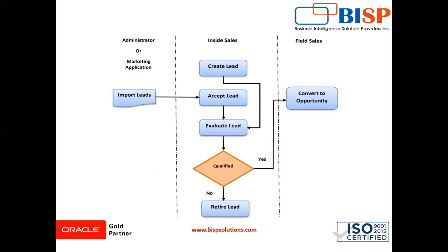Using assignment rules created by you, the application automatically assigns all inside sales representatives to the sales team on each of the imported leads. The inside sales representative verifies the information in each lead. They check for potential duplicates, contact the customer, and answer a standard list of questions in the qualification template that you set up for them.